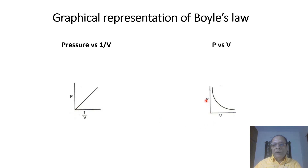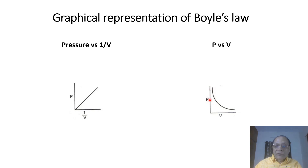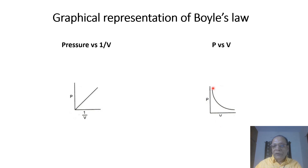When pressure is plotted against V, we have a curved line which becomes parallel to the x-axis. As pressure increases, the volume falls, but the fall is not straight. A curve is obtained when we plot the values after experimentation and connect the dots.